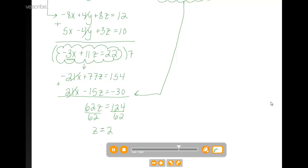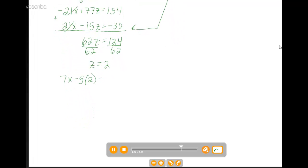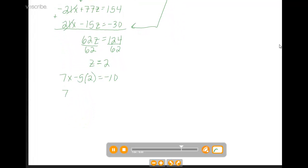Since we have z solved from that two-variable system, we can plug back in to solve for x. You can plug into either one of these equations in the cloud to solve for x. I'm going to pick this one over here. So 7x minus 5z, which we just found was 2, equals negative 10. When we add 10 to both sides, we get that 7x is equal to 0, which means that x must have been 0.